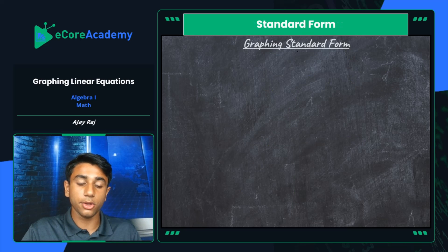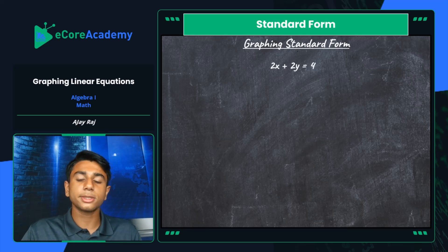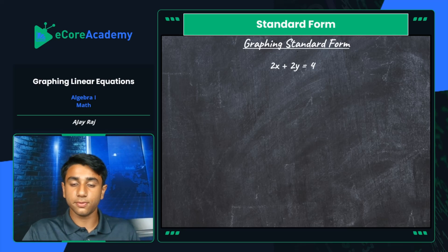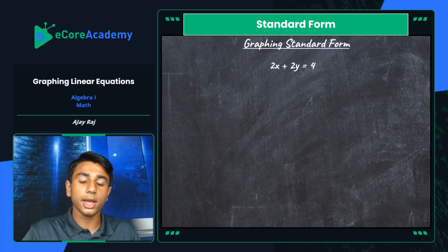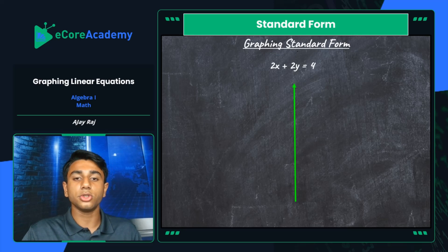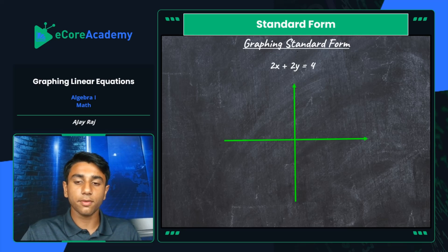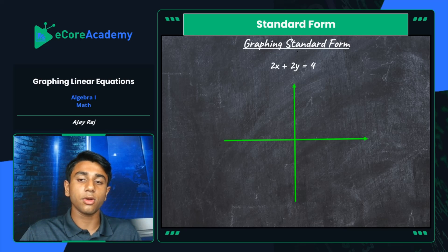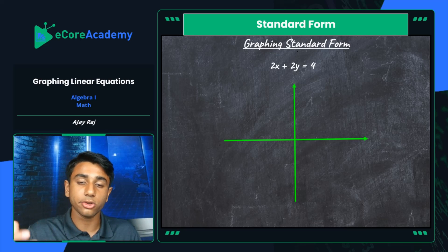Now let's look at standard form. How do you graph standard form from equation to graph? We're given the equation 2x plus 2y equals 4, written in the form ax plus by equals c. Here c is 4, our constant term. The coefficient A is 2 multiplied to x, and B is also 2 multiplied to y. The easiest way to find points in standard form is that it always provides the x and y intercepts.